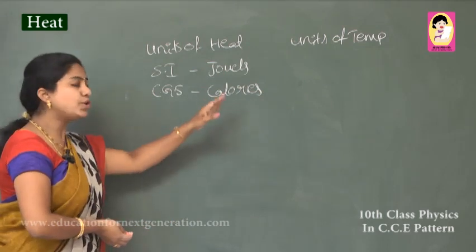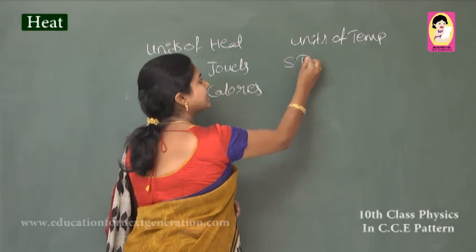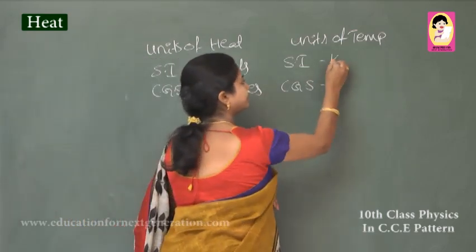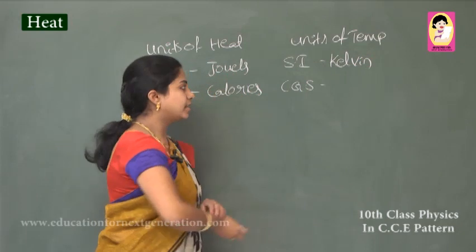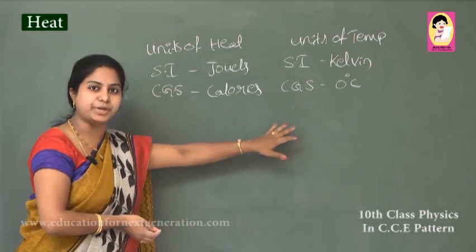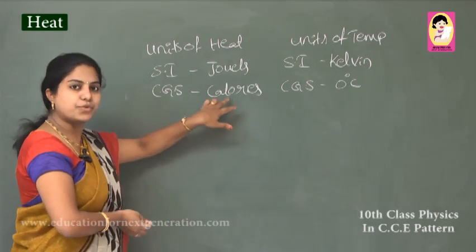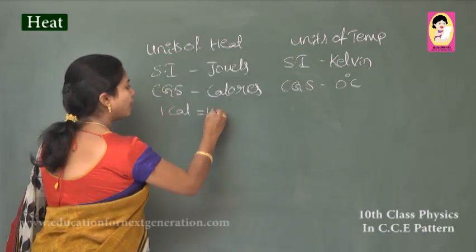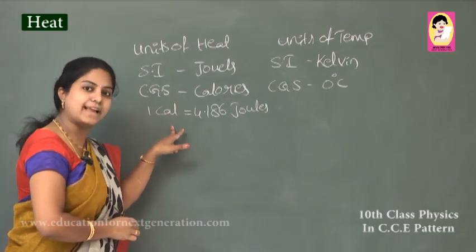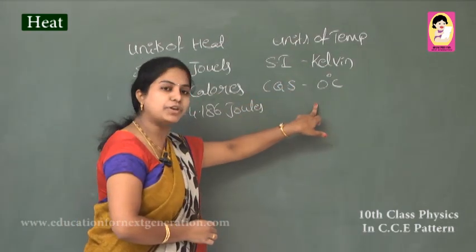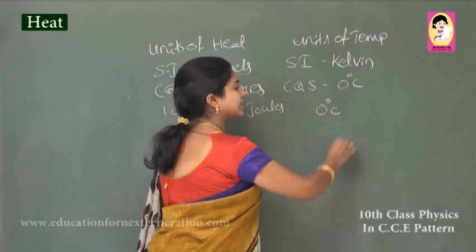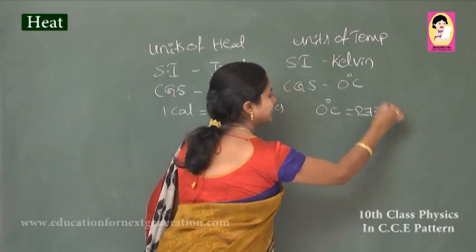Units of temperature also have SI and CGS forms. The SI unit of temperature is kelvin, and the CGS unit is degree Celsius — which we commonly observe on thermometers. One calorie is equal to 4.186 joules, and the conversion relation is: zero degree Celsius equals 273 kelvin.